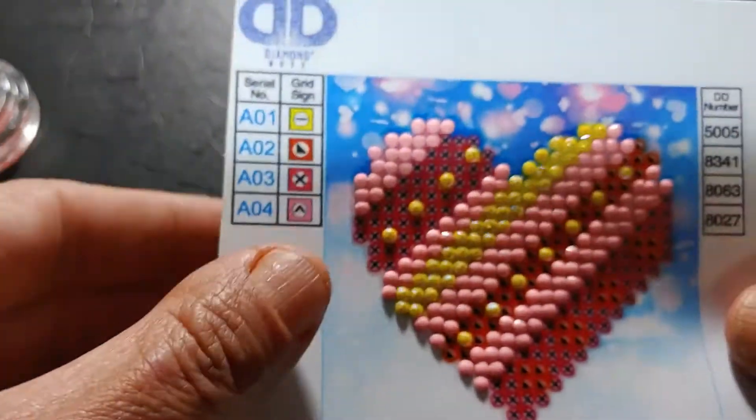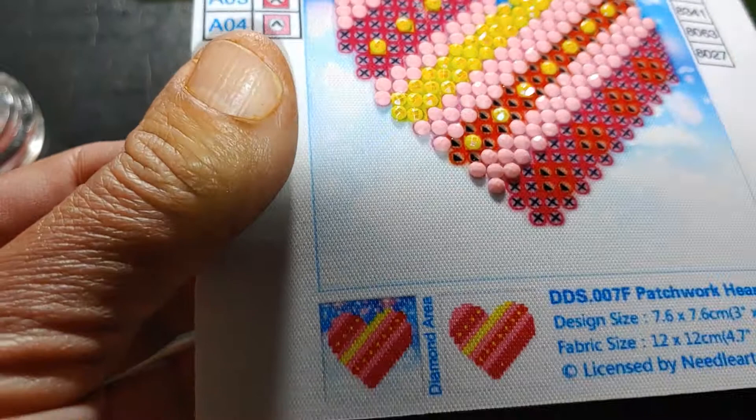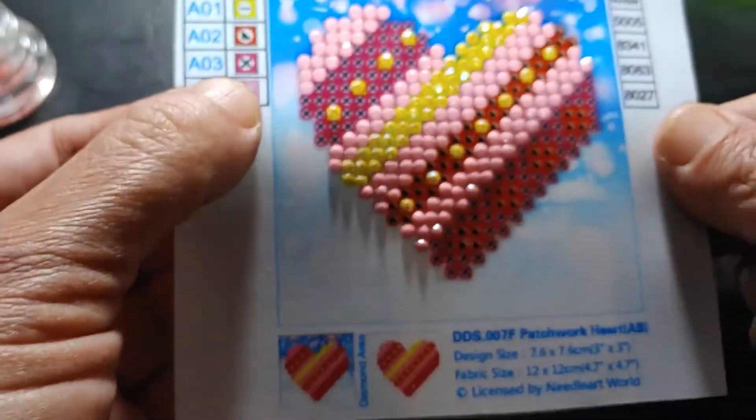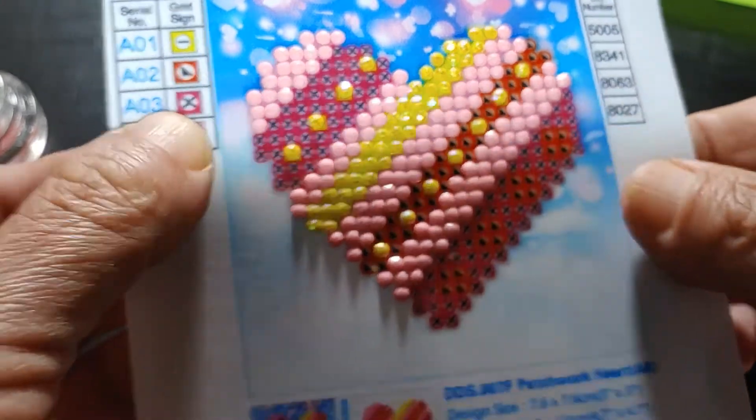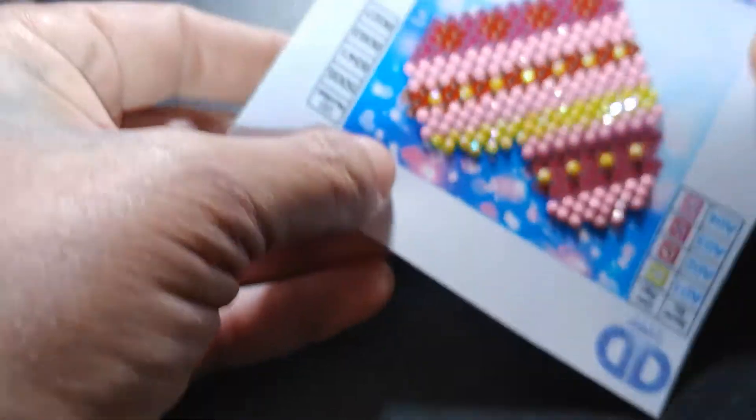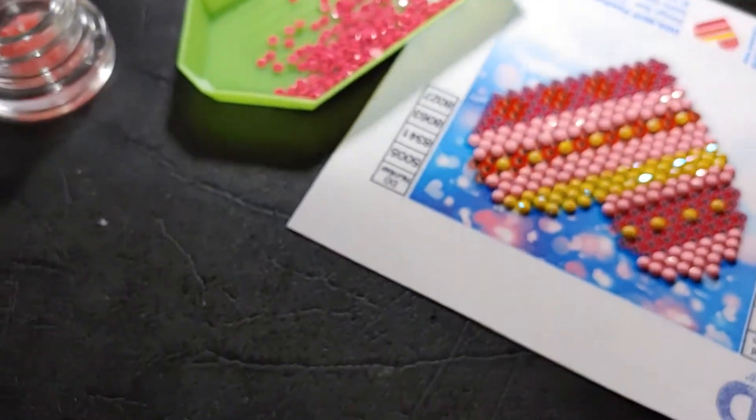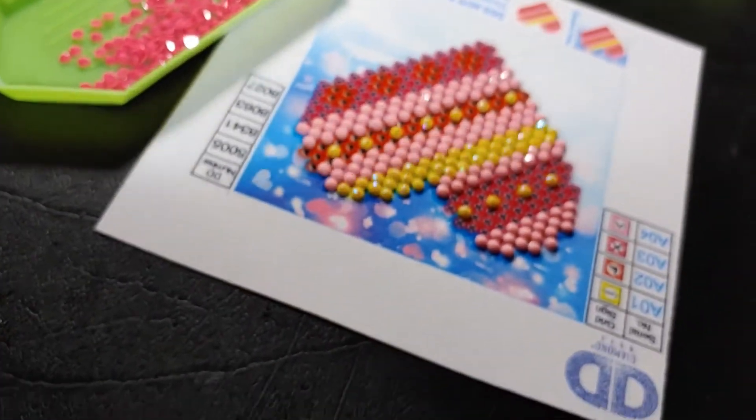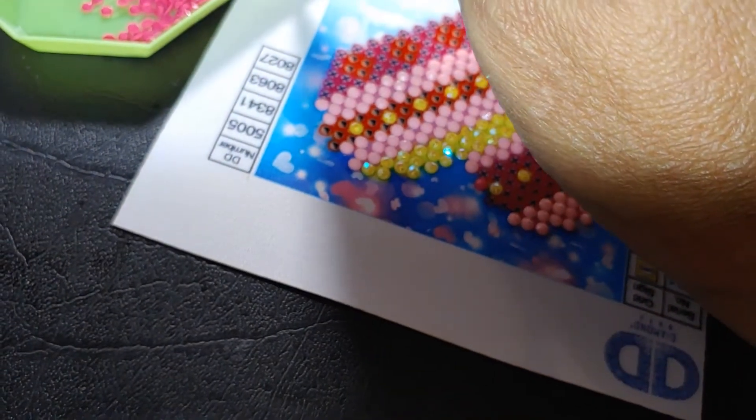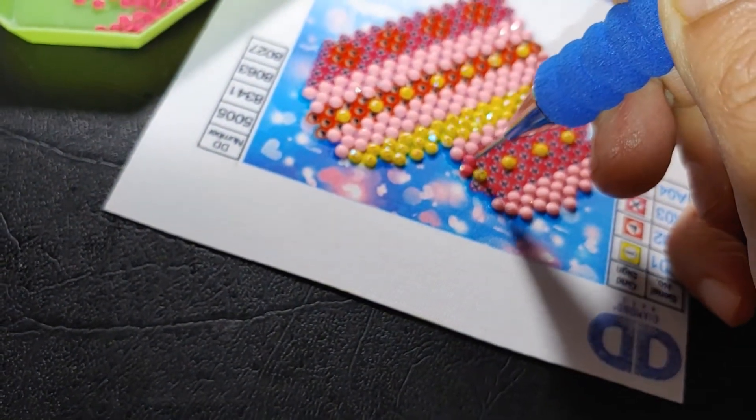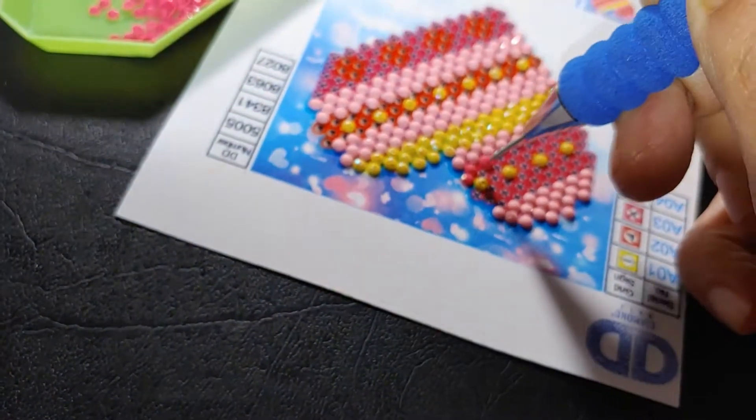I've got the yellow and the pink or the very light pink. I'm going to work on what is the number three here in the symbol, which is the little X. I'm going to go ahead and put it sideways so that way I'm not touching the stickiness of that area.